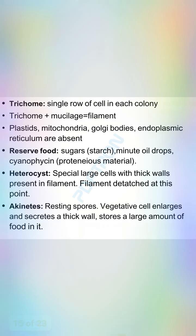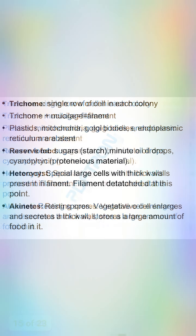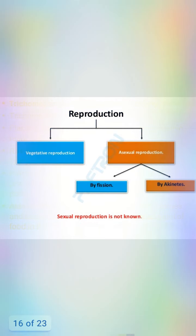Thick-walled cells are present in the prominent filament. Akinetes are detached at certain points. The akinetes are long-lasting spores. Vegetative cells enlarge and accumulate a large amount of food. These are involved in the production of Nostoc through vegetative reproduction.